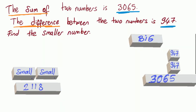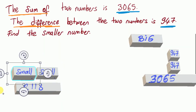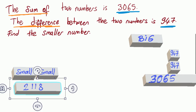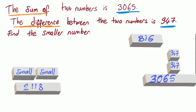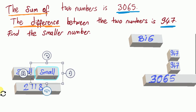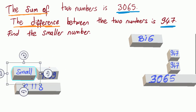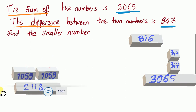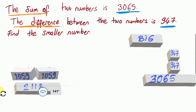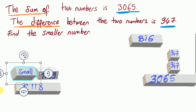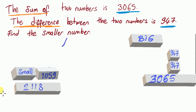Now we have two small numbers equal to 2118. So one small number is equal to 1059. So the small number is 1059.